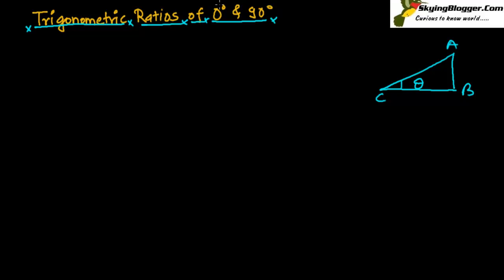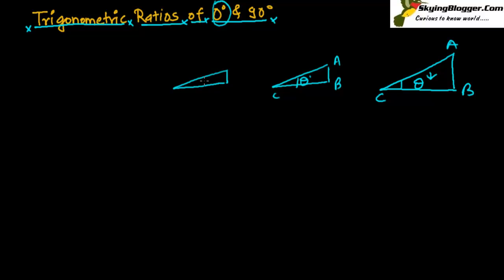Now, we are especially dealing with 0 degree. Suppose what will happen if the value of theta keeps decreasing continuously. Let me draw another figure in which the value of theta is a bit smaller. It will be looking like this — A, B and C with theta dash. Suppose this is even more smaller.